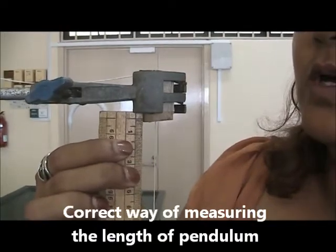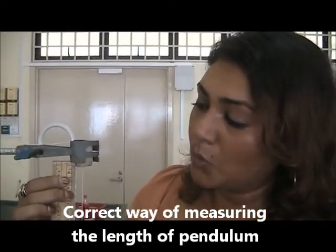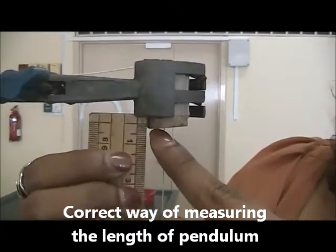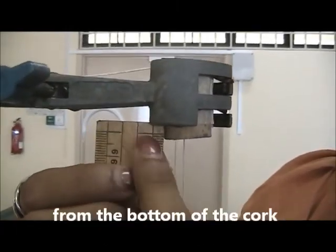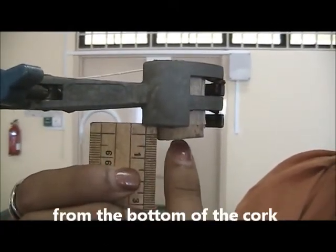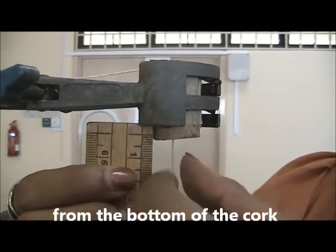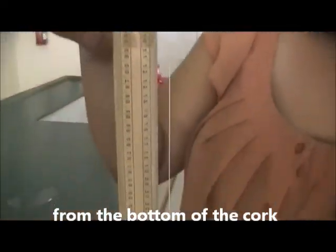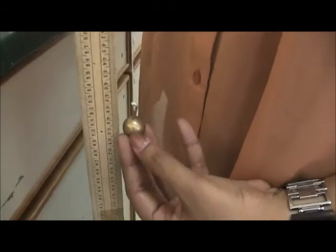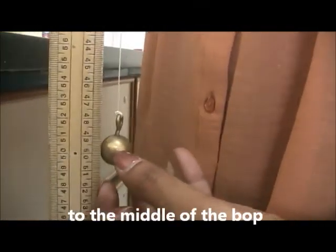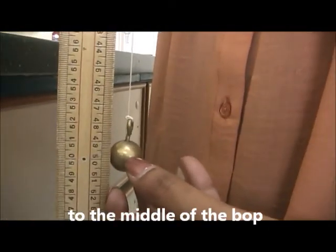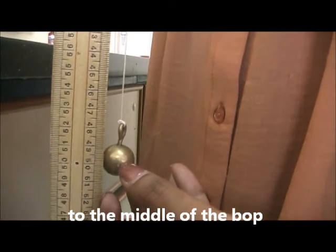The correct way of measuring the length of a pendulum would be from the bottom of the cork. You have to ensure that the scale starts from where you see the thread and all the way down to the middle of the ball, where the center of gravity is. You'll notice that the length of this pendulum is 50 cm.